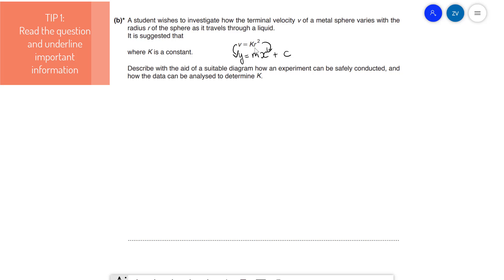Well, let's finish it. Describe with the aid of a suitable diagram. Okay, this is brilliant. So what we need to do is have a suitable diagram of our experiment, how an experiment can be safely conducted. Notice the word safely. So we need to be talking about some safety precautions that would depend on the experiment, but we need to have a little section on safety. And finally, we need to include a section on how the data can be analyzed to determine the constant K.